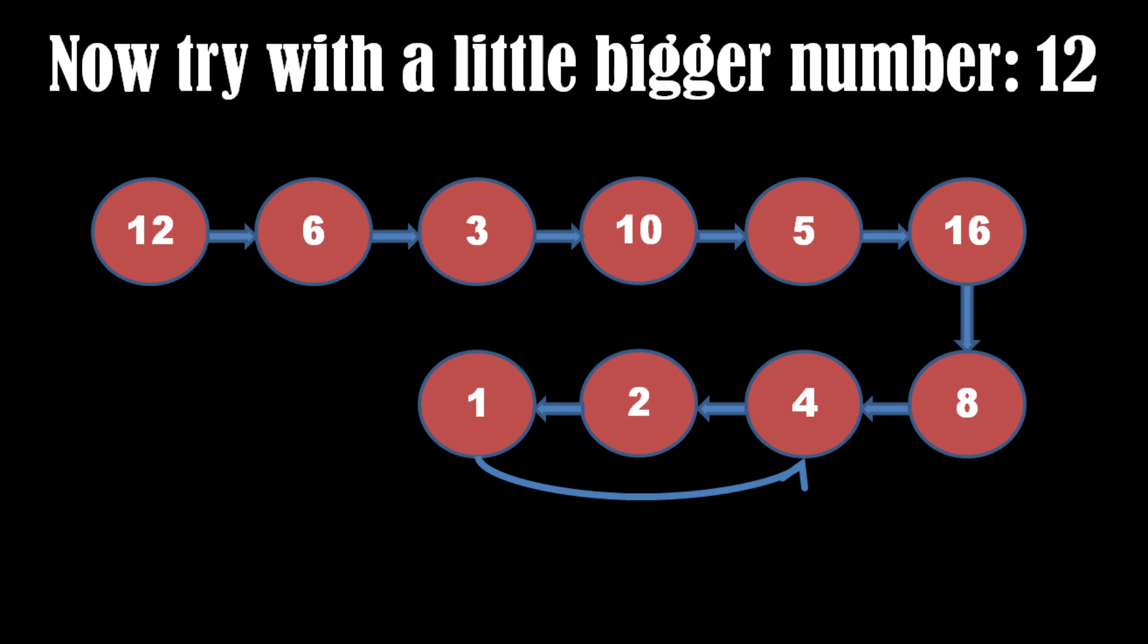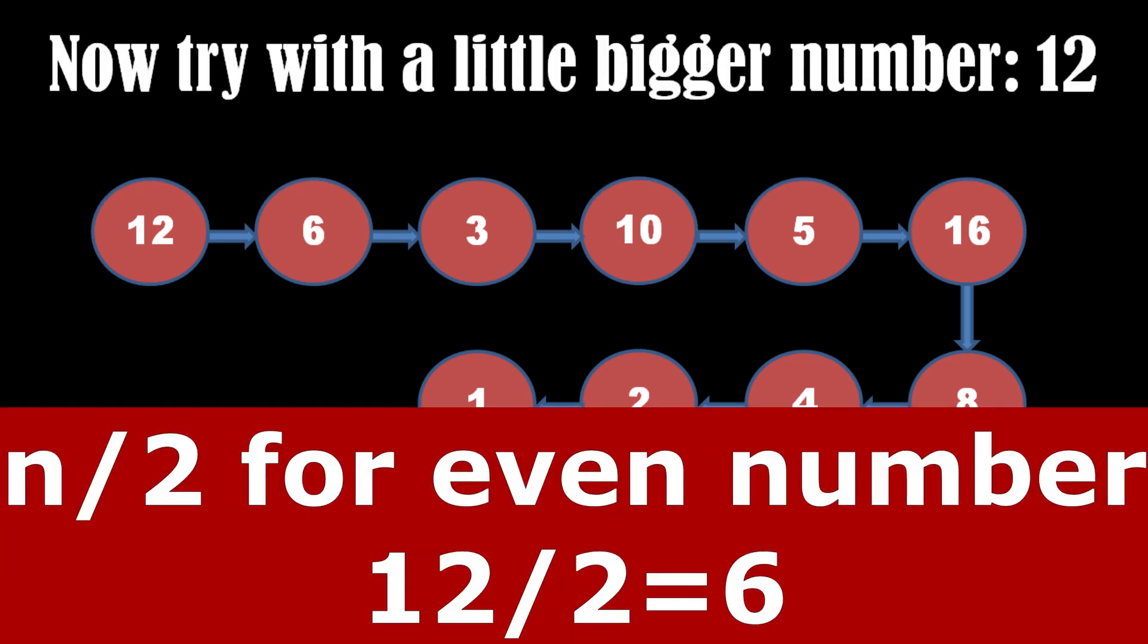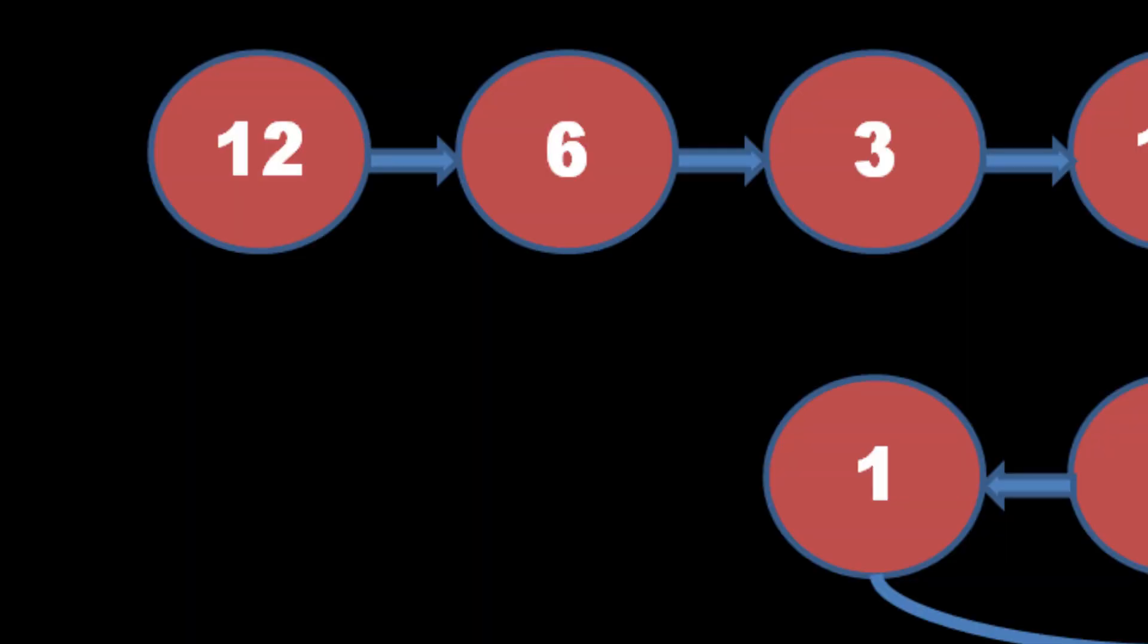Let's take number 12. We will repeat the same process with number 12 to get a sequence of numbers. Since 12 is even, we divide it by 2 and get number 6. It's again an even number, so divide it by 2 once again.